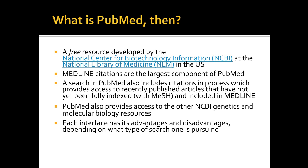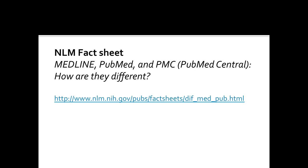Each interface has its advantages and disadvantages depending on what type of search one is pursuing. PubMed is generally easier to search than Ovid, but it can return large numbers of irrelevant articles unless the user is familiar with the advanced search techniques of the system. Ovid can be more difficult to learn, but complex and precise searching is easier to do on Ovid than on PubMed. It allows a greater level of control over a search, which can result in retrieval of fewer irrelevant articles.